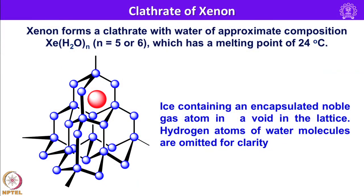For example, xenon forms a clathrate with water of approximate composition Xe·(H2O)n where n equals 5 or 6, which has a melting point of 24°C. This represents ice containing an encapsulated noble gas atom in a void in the lattice. The hydrogen atoms of water molecules are omitted for clarity — only oxygen is shown — and you can see this group 18 element xenon sitting in the void.